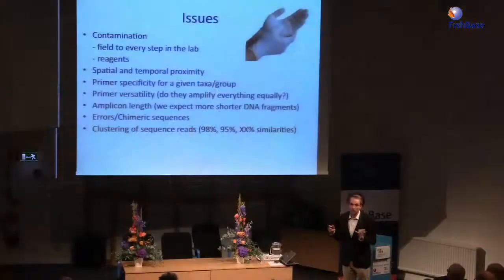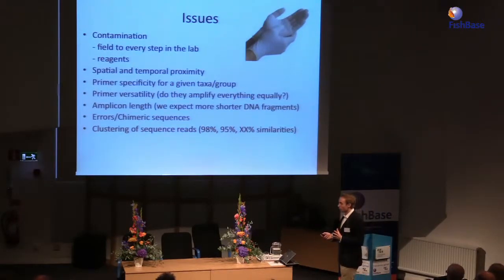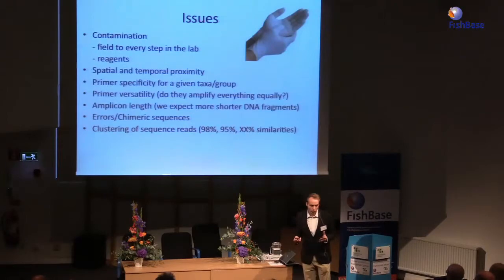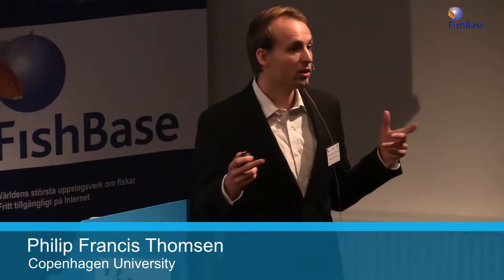The clustering of sequence reads is also an issue. You get a lot of variation within sequences and many are confined to the same species. At what similarity level should you cluster the sequences — 98%, 95%? What similarity estimates should you use to cluster sequences into molecular operational taxonomic units? I think we need to change our view: in environmental DNA we shouldn't necessarily think about species diversity, we should think about genetic diversity — sequence reads diversity. That's how we should think.